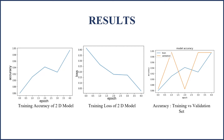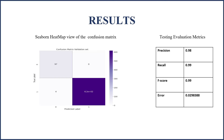Here we see the graphs obtained from evaluation during training and validation of the model: the training accuracy of the 2D model, the training loss of the 2D model, and the accuracy comparison between the training versus the validation set. From the confusion matrix, it is evident that we achieved a validation set accuracy of 97% with an approximate loss of 2.54. The evaluation metrics are: precision at 98%, recall at 99%, F-score at 99%, and error at 0.0298.